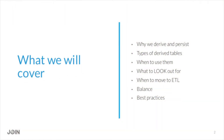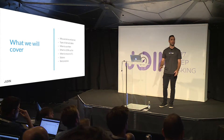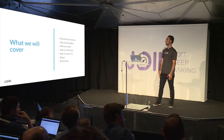What we're going to cover today is why we derive and persist — some background, a brief introduction to derived tables, types of derived tables, when to use them, and what to look out for. And when to move to an ETL. At a high level, this talk is really about why we build derived tables and when it's time to migrate them over to the ETL — the balancing act — and some development best practices in Looker.